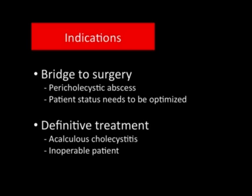The patient in which gallbladder drainage represents a bridge to surgery is typically a patient who suffers from gallbladder obstruction and is not a candidate for immediate surgical treatment because of contraindications. These contraindications can depend on the patient's general status — for example, coagulation problems — or local conditions such as pericholecystic infections. These patients may undergo percutaneous cholecystostomy to decompress the obstructed gallbladder as a first temporizing measure, and after symptoms have subsided and status is optimized, the definitive treatment will usually be cholecystectomy.